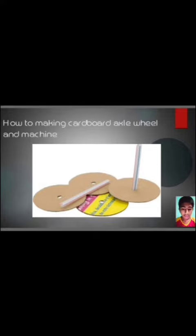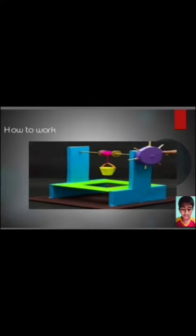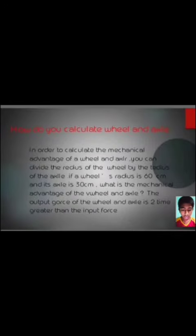How to work: How do you calculate wheel and axle? In order to calculate the mechanical advantage of a wheel and axle, you can divide the radius of the wheel by the radius of the axle.